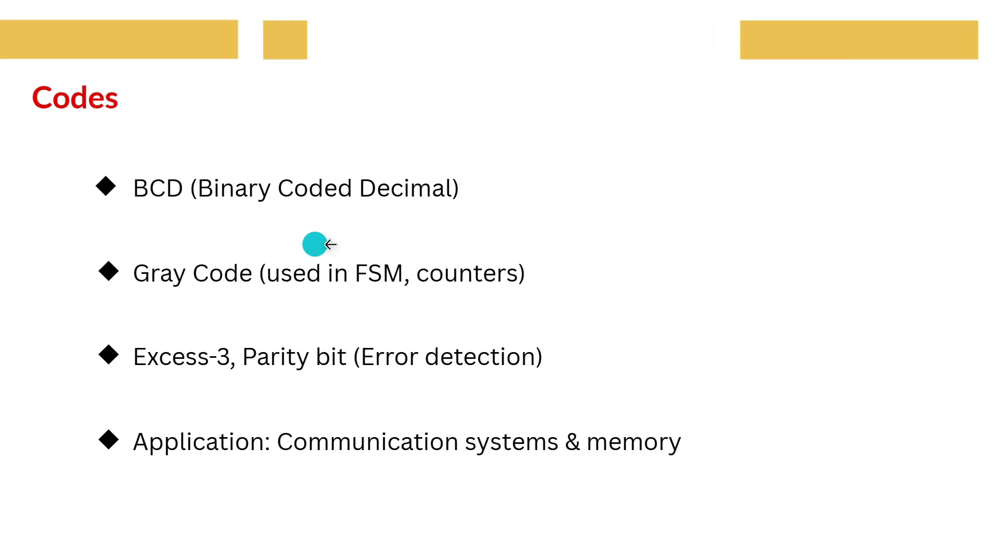Codes. Now let's talk about codes. Some important ones are BCD, gray code, XS3 and parity bits. For example, gray code is very useful in FSMs and counters because only one bit changes at a time, which reduces errors.